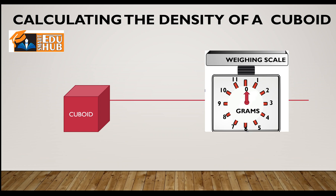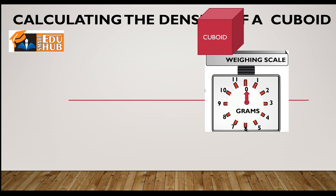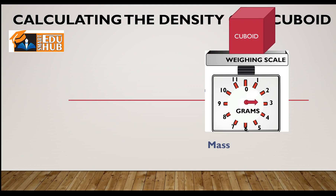Note that the weighing scale is calibrated in grams. Observe the pointer to where it stops after the cuboid is placed on the weighing scale. We come to know that the mass of the cuboid is 3 grams.